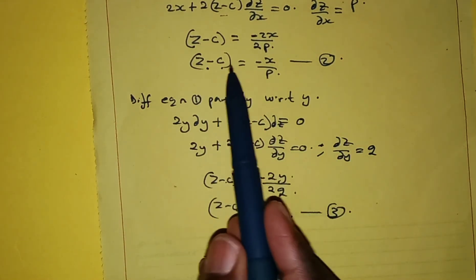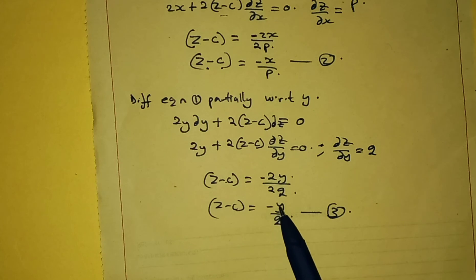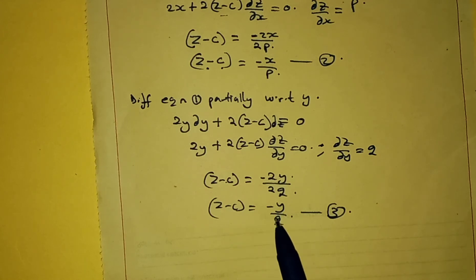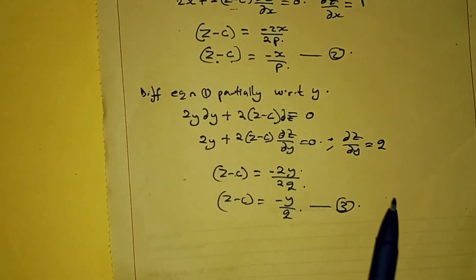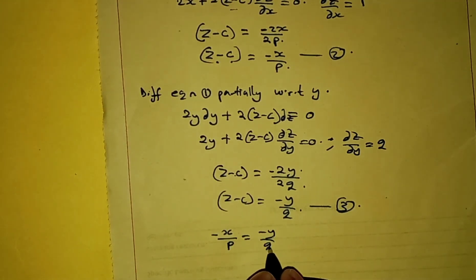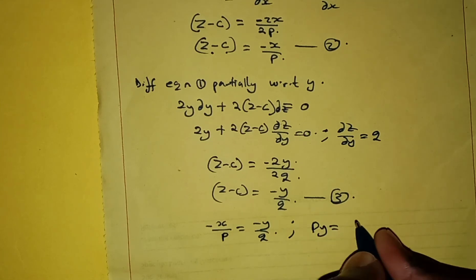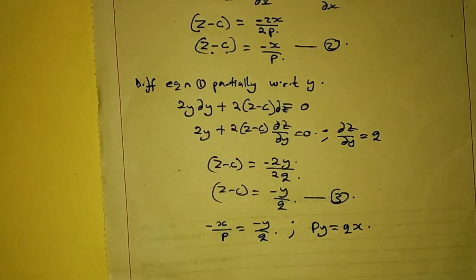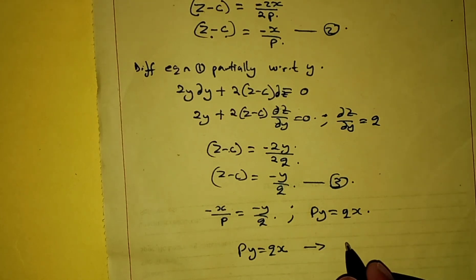We have z minus c equals negative x over p from equation 2, and z minus c equals negative y over q from equation 3. Since both expressions equal z minus c, that really means negative x over p equals negative y over q. Cross multiplying, the negative signs cancel and we get py equals qx. This is the required partial differential equation.